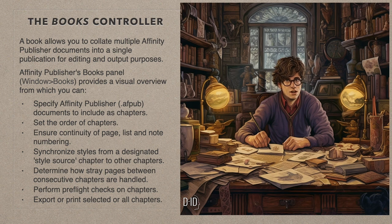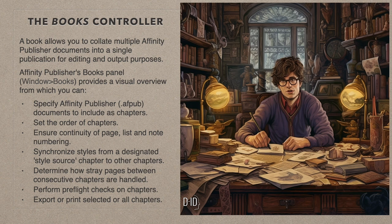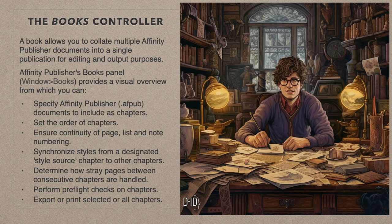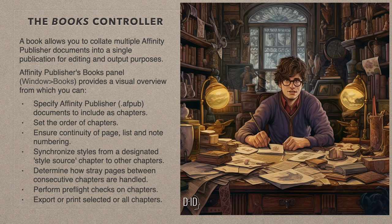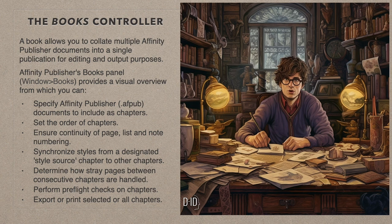Affinity Publisher's Books panel provides a visual overview from which you can: 1. Specify chapters. 2. Set the order of chapters. 3. Ensure continuity of page, list, and note numbering. 4. Synchronize styles from a designated style source chapter to other chapters. 5. Determine how stray pages between consecutive chapters are handled. 6. Perform pre-flight checks on chapters. 7. Export or print selected or all chapters.